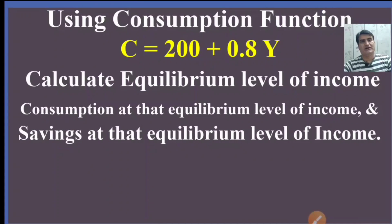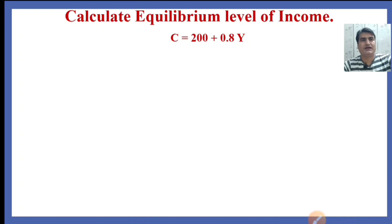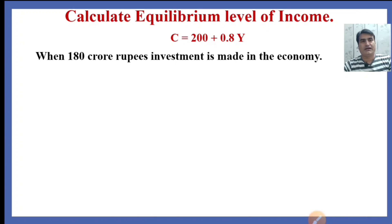In this lecture, we shall calculate the equilibrium level of income and consumption at the equilibrium level of income, and also we shall calculate the savings at that equilibrium level of income. The given consumption function is 200 plus 0.8Y, and 180 crore rupees investment is made in the economy.